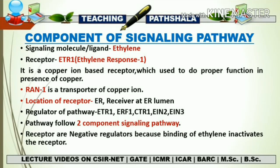The most important point regarding the components of the signaling pathway is that the receptors are negative regulators, because binding of Ethylene inactivates the receptor. In other phytohormone pathways, binding of a ligand to its receptor causes activation of that receptor. This is the exceptional case in which binding of a ligand to a receptor causes deactivation or inactivation of that receptor — that is why the receptor is a negative regulator.